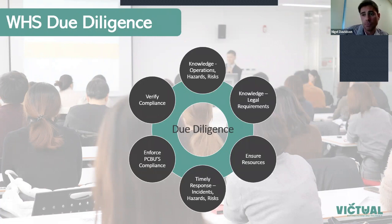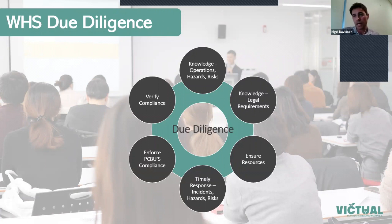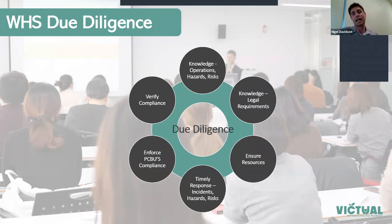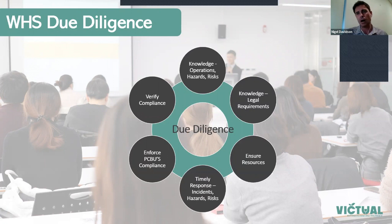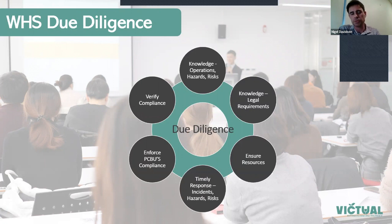Third element: ensure adequate resources — human resources, best equipment, and systems and processes for learning and improvement. Are your staff overworked or fatigued? Fourth: timely response to incidents — is your lab recording incidents, and are you actually learning from them? It's not enough to have people report incidents; you need to be learning as an organisation. Fifth: enforcing compliance — if gaps are identified, are plans in place? And sixth: verifying compliance — how much are you engaging with your workforce and work environment, doing checks and balances.